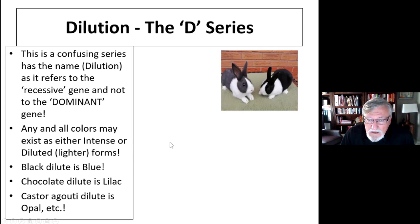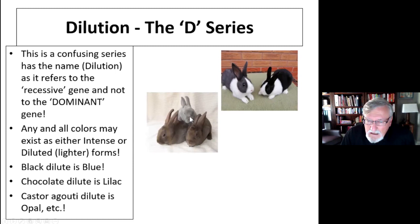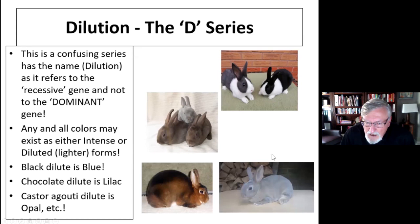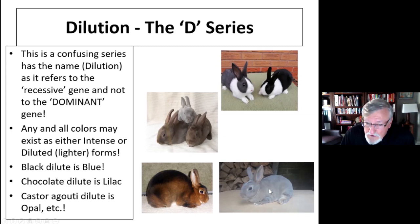Chocolate dilute is lilac. Here you see two chocolates and a lilac. At the B series, all of them are recessive b/recessive b, but at the D series, the lilac has two small d's — recessive. On the left, you see a castor agouti in Rex — a black rabbit, but agouti. What is the dilute? The dilute is an opal. An opal is simply a diluted little d/little d castor. Changed the appearance totally, but they're both basically black rabbits impacted by modifying genes.